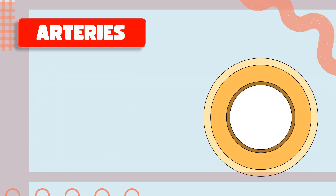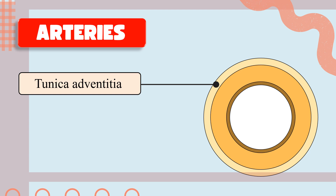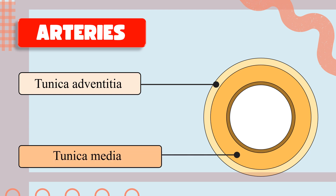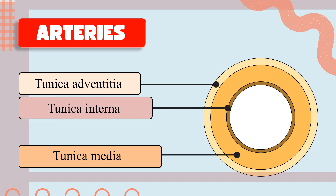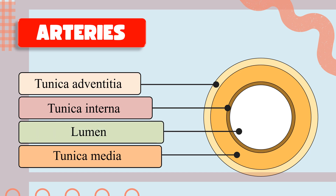Next, regarding the structure of arteries — here you can see this is the typical cross-section of an artery. The outer layer is called tunica adventitia, which is a thick outer layer of collagen fibers. The layer beneath it is the middle layer, tunica media, which has thick muscles and elastic fibers so that it can withstand high pressure. The inner layer is tunica interna, the innermost layer of endothelial cells. Then there is the lumen — a narrow space required to maintain high blood pressure.